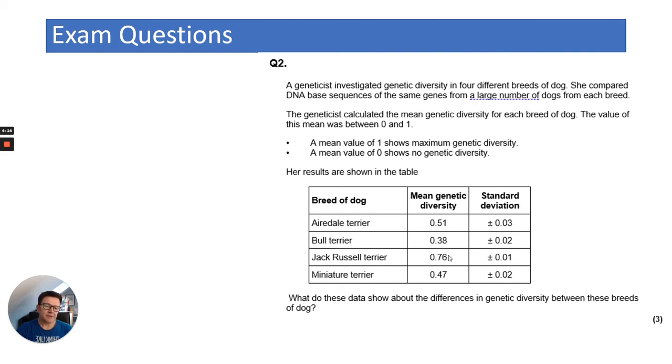So the first thing is you need to kind of probably talk about the data. So you can see the Jack Russell Terrier has the greatest mean genetic diversity. Miniature Terrier and Bull Terrier are very similar. Sorry, no, Airedale Terrier and Miniature Terrier are similar genetic diversity. The Bull Terrier has the least genetic diversity. Then look at the standard deviations and you could say that there is no overlap between the standard deviations.